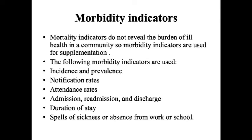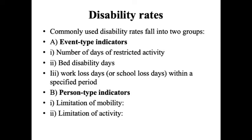We also have disability rates, usually divided into two groups. Event-type indicators include number of days of restricted activity, bed disability days, and work loss days within a specific period. Person-type indicators include limitation of mobility and limitation of activity. These indicators give us the disability rates.